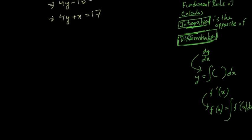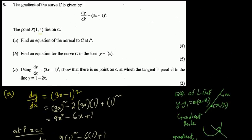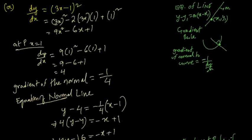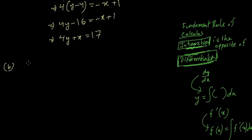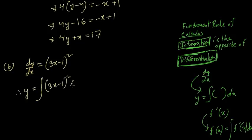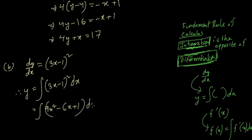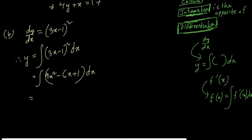dy/dx = (3x - 1)², so y = ∫(3x - 1)² dx. Expanding first: (3x - 1)² = 9x² - 6x + 1. Integrating: the power increases by 1 and you divide by that power, so 9x² becomes 9 × x³/3, and 6x becomes 6 × x²/2.